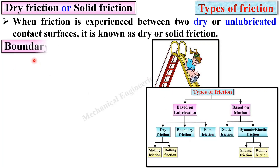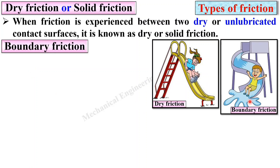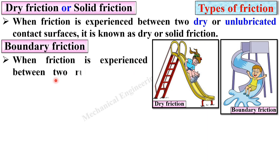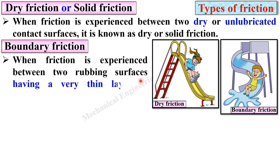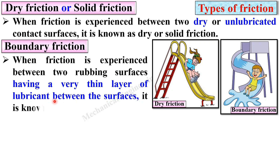Next, boundary friction. From the figure you can see there is a boundary friction between these two surfaces. When friction is experienced between two rubbing surfaces having a very thin layer of lubricant between them, it is known as boundary friction. In dry friction there is no thin layer, but in boundary friction there is a thin layer between the surfaces.